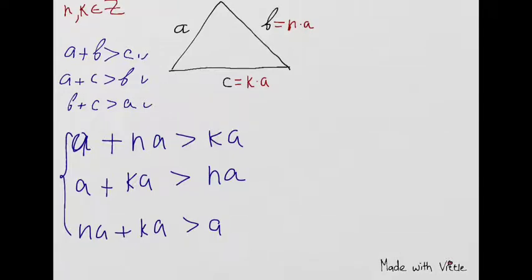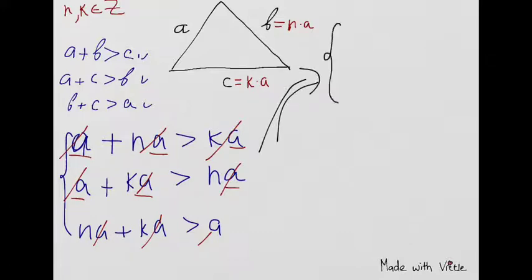After getting these three systems of inequalities, we can cancel. In all terms we have this A, and we know that A is a side of a triangle and cannot be a negative number. Knowing that A is positive, we can cancel A from each inequality. Then I got 1 plus N more than K, 1 plus K more than N, and N plus K more than 1.